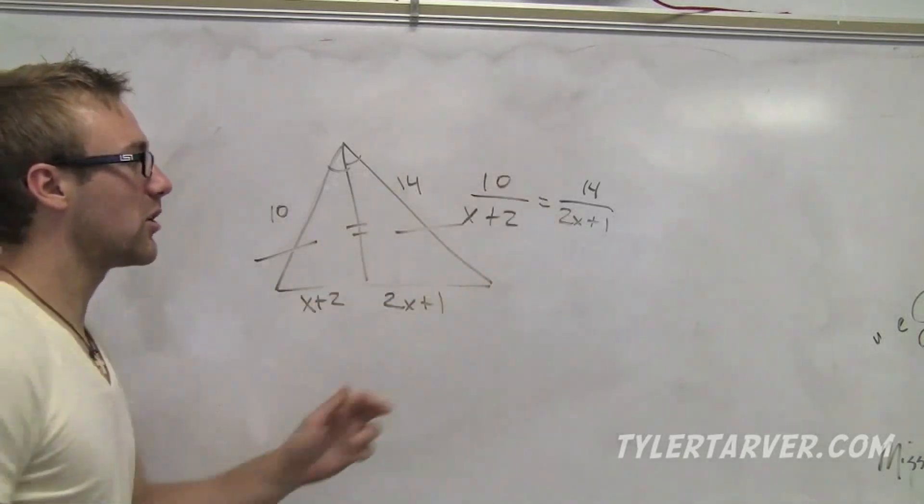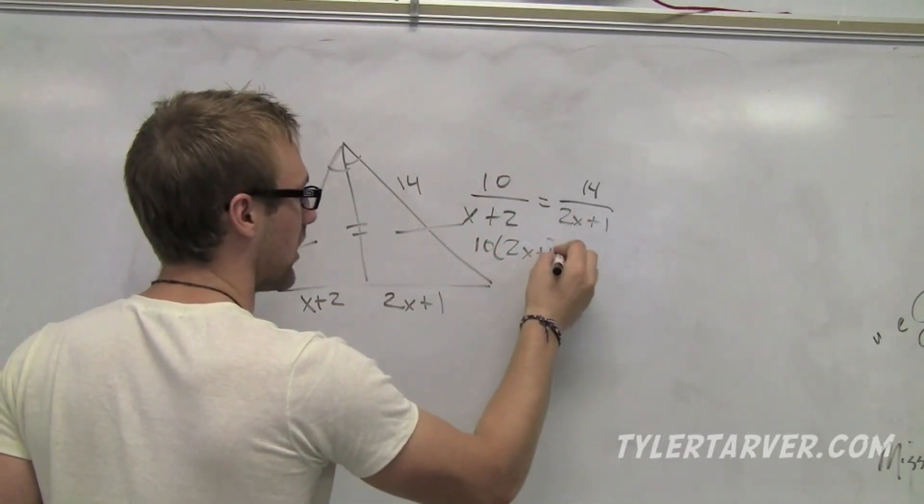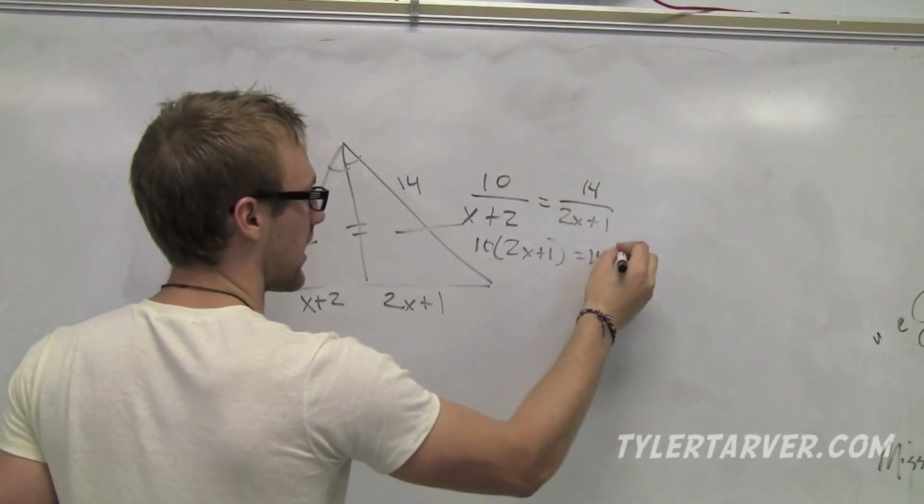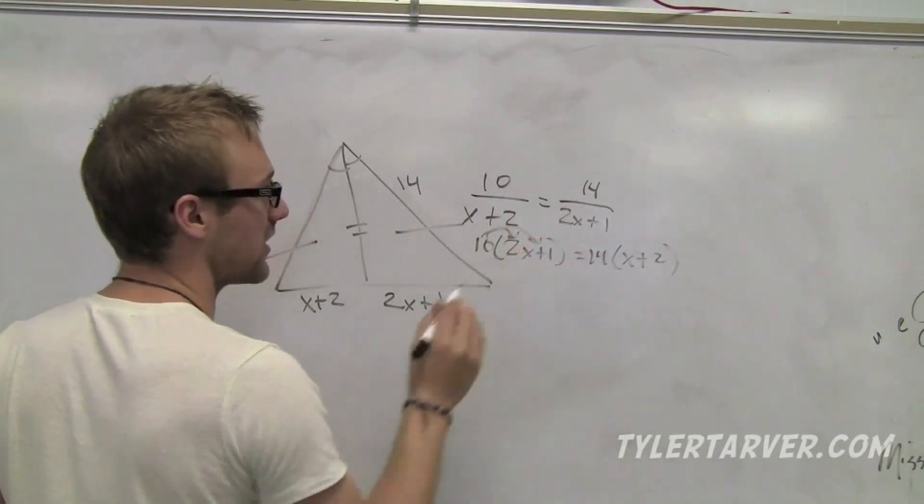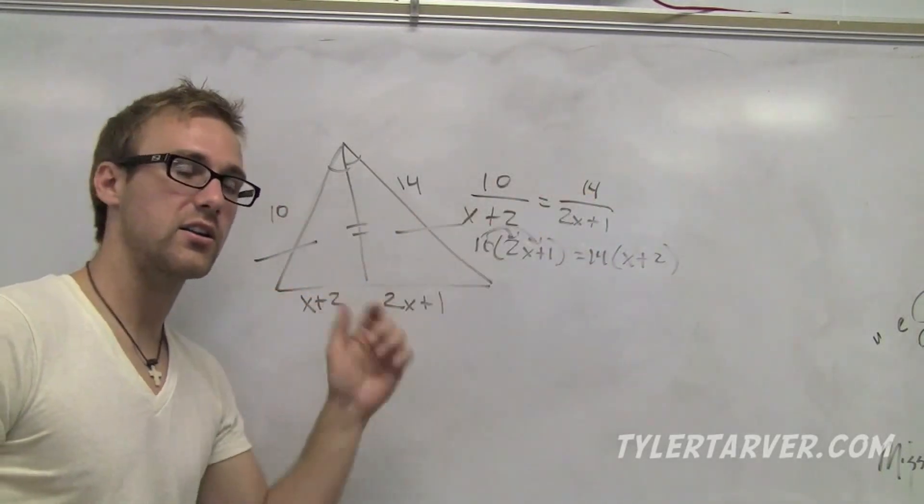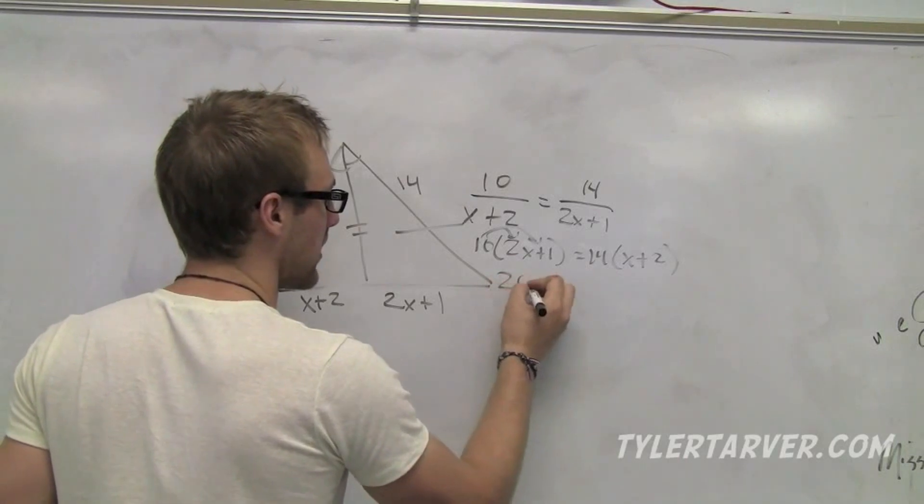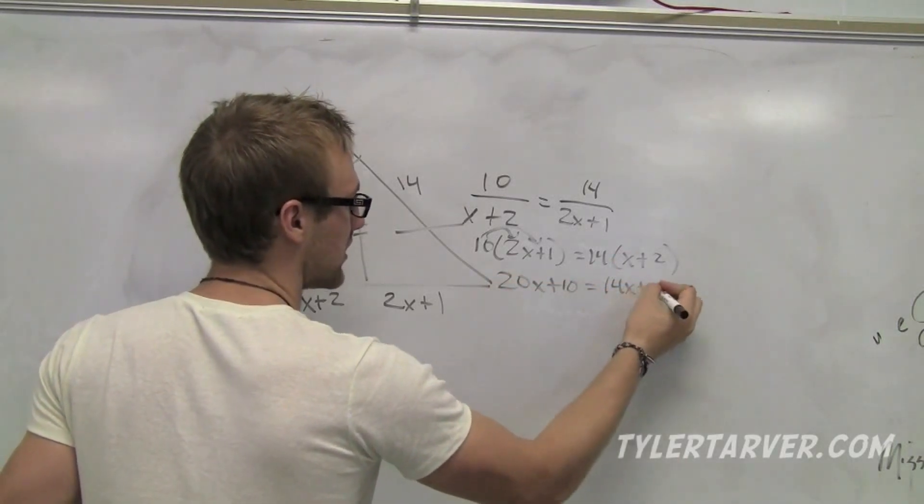Now, when you cross multiply these, you have to put it in parenthesis. 2x plus 1, and then 14 times x plus 2. That way you can distribute. Do not forget to distribute. Sometimes they'll just do 10 times 2 and they'll leave it as 1 down there. You've got to distribute. So that's 20x plus 10 equals 14x plus 28.